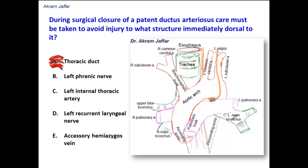The left phrenic nerve — the second option — is close to the arch of the aorta and passes in front of the arch of the aorta, but it passes away from the ligamentum arteriosum and does not pass dorsal to it.